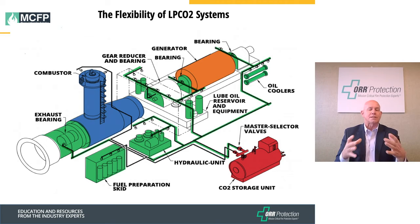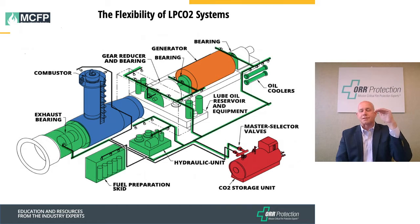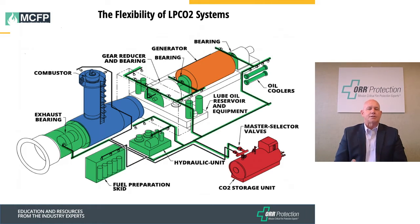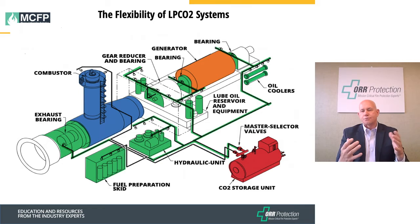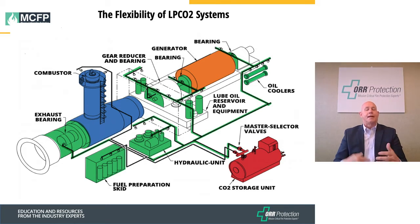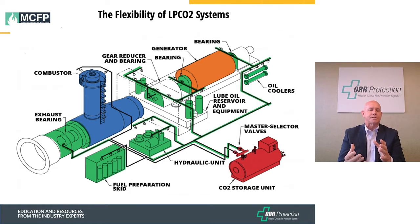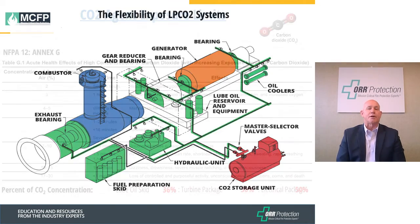The benefit of a bulk CO2 system is that a truck comes in, backs up to the bulk storage, fills it up, and you're done — instead of pulling out all individual bottles. A system this size can be a 12-ton, 8-ton, or 4-ton unit. The largest high pressure CO2 cylinder is about 100 pounds, so imagine how many bottles a 12-ton system would require. That's why low pressure is so widely used in power generation and roll mill industrial applications.